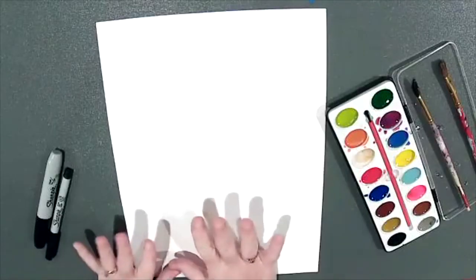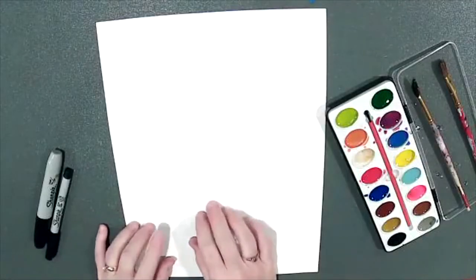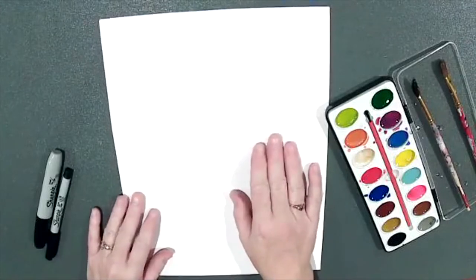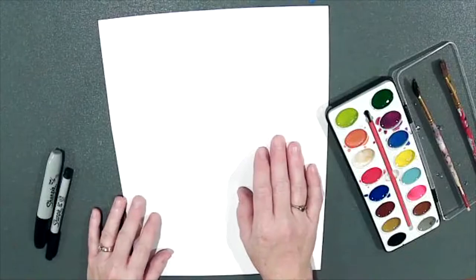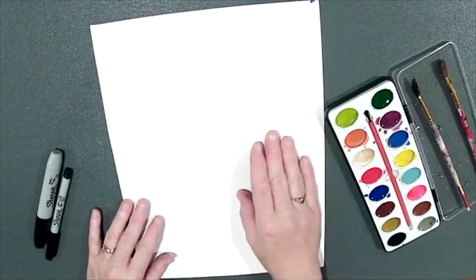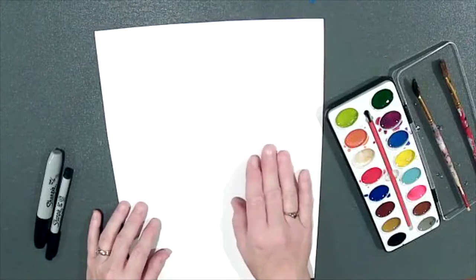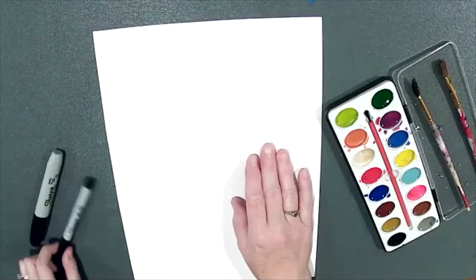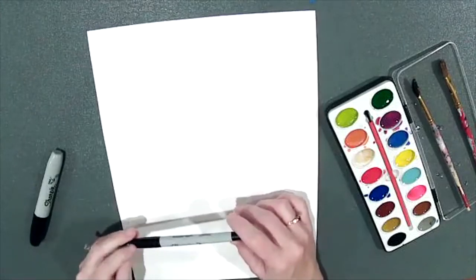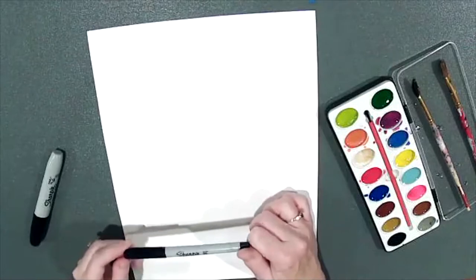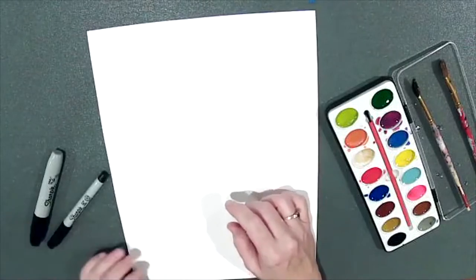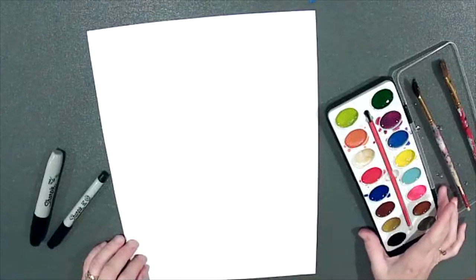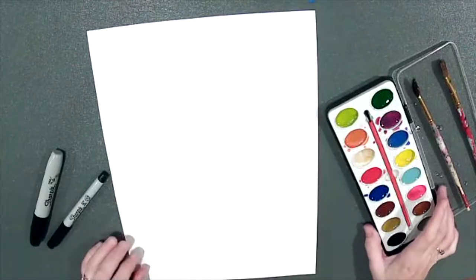All right friends, so what we need for today's drawing is a piece of drawing paper. I would suggest white paper. You probably can use a different color paper, but white is going to be best for everything to show up. You're also going to need a Sharpie or two, or some kind of waterproof pen. If you want to start in pencil first, you can do that. And then we're also going to need some watercolor paints, water, and brushes.